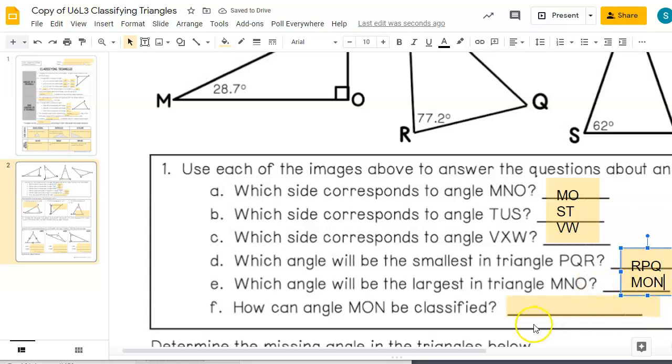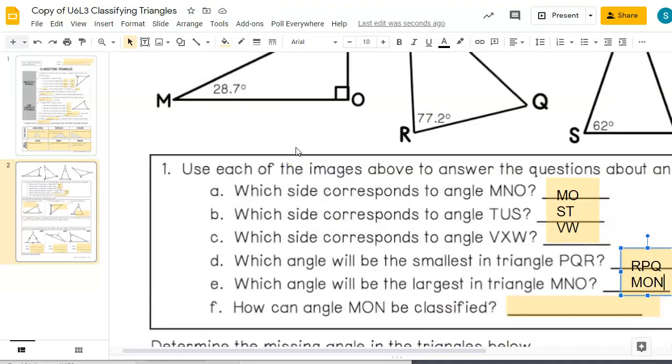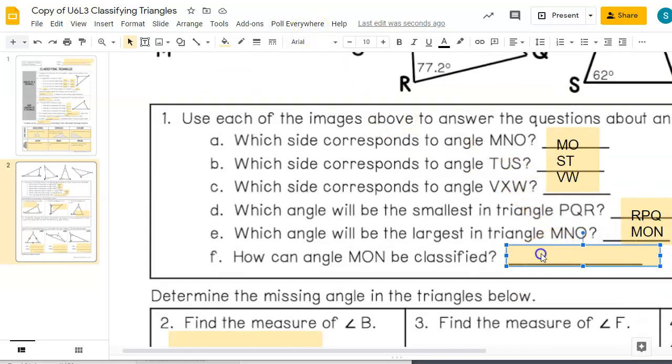How can angle M-O-N be classified? Well, it is a right angle. It's got that little square in it that tells us that it is a right angle.